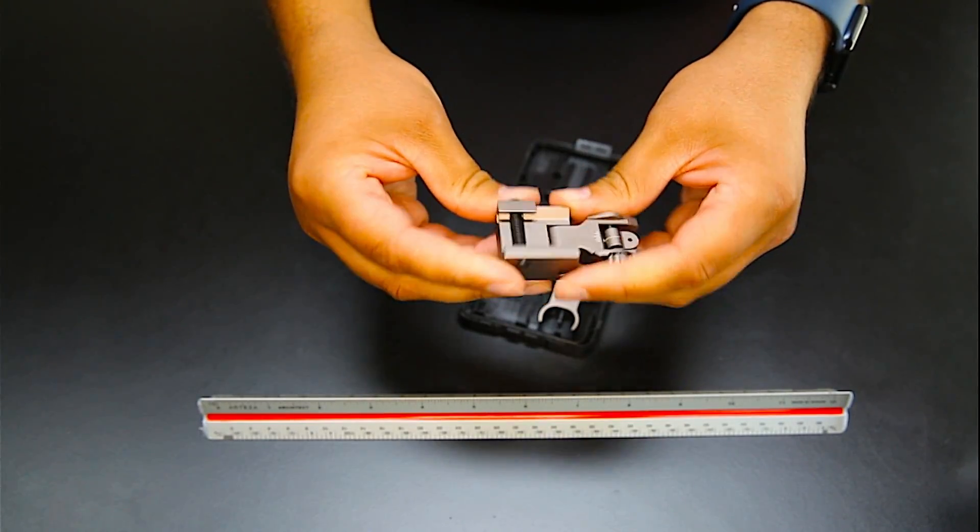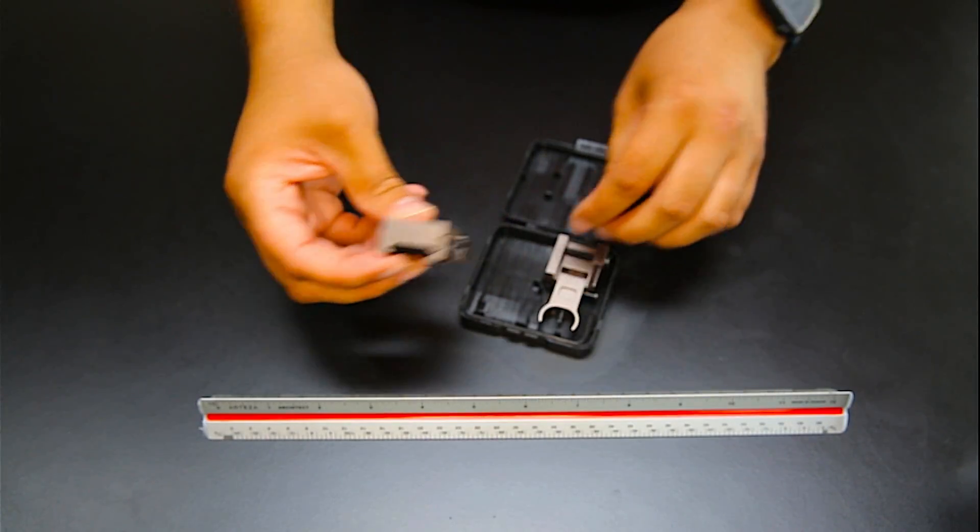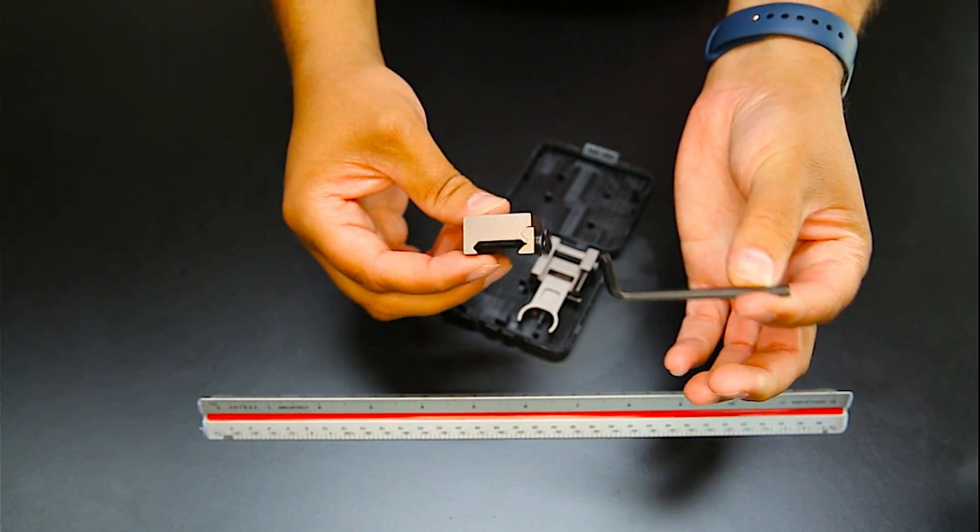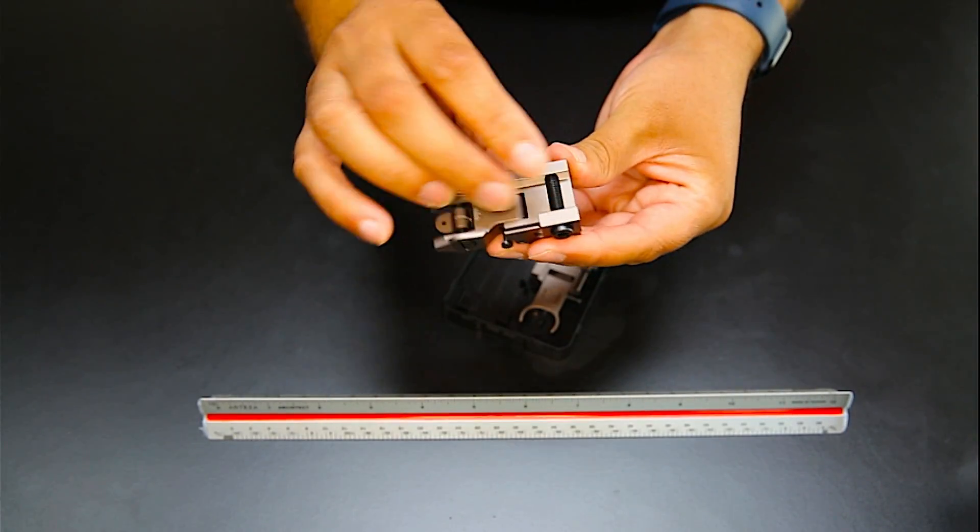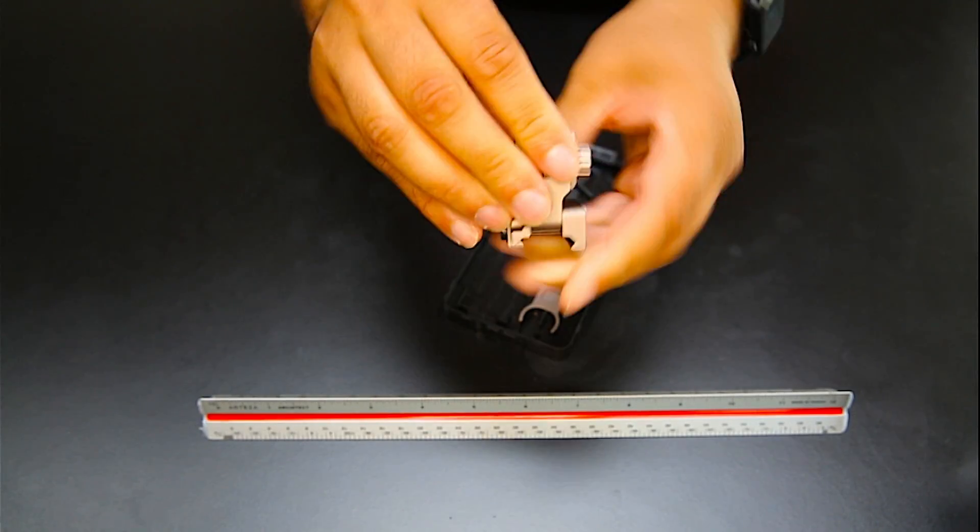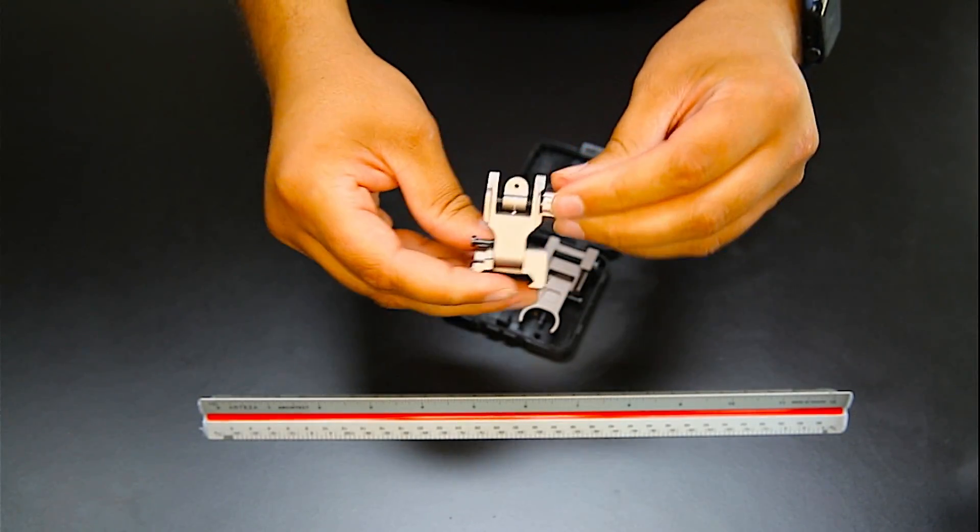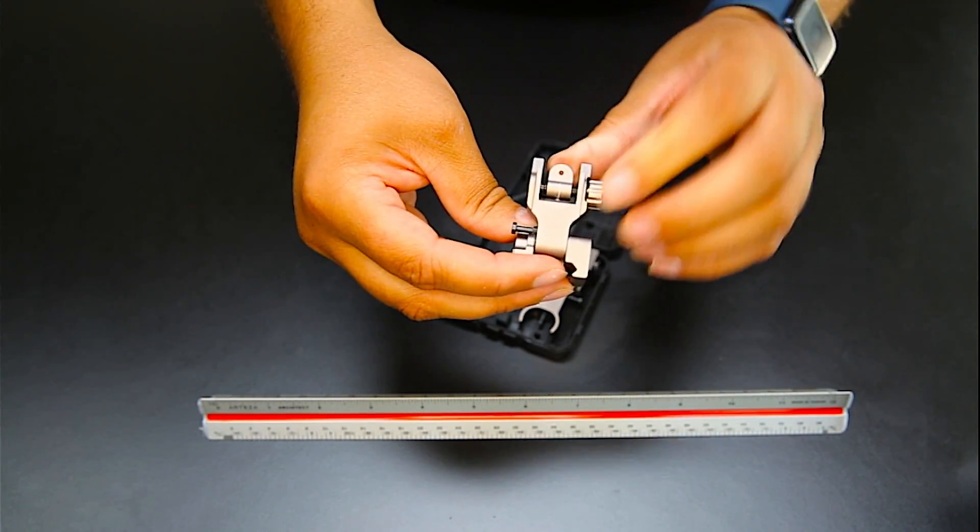It hooks onto the rail with an Allen wrench - loosen it up, hook it on, tighten it up and you're good to go. The rear has the precision option right here.